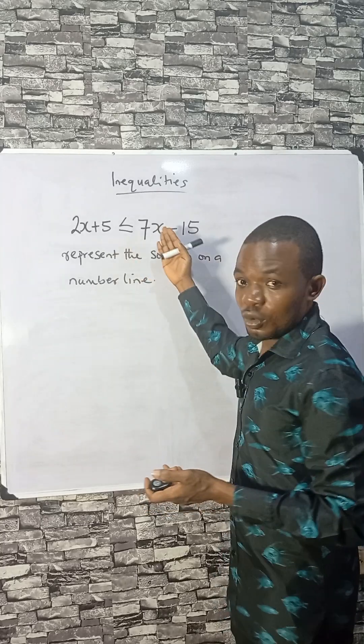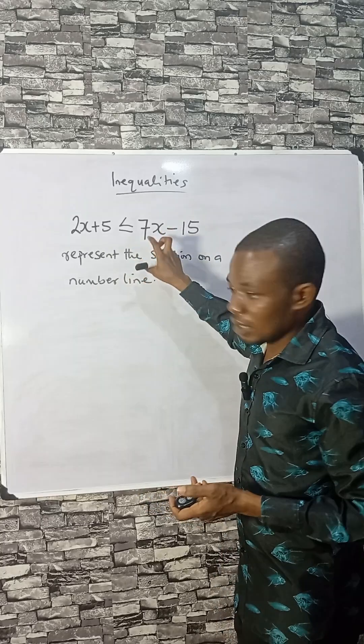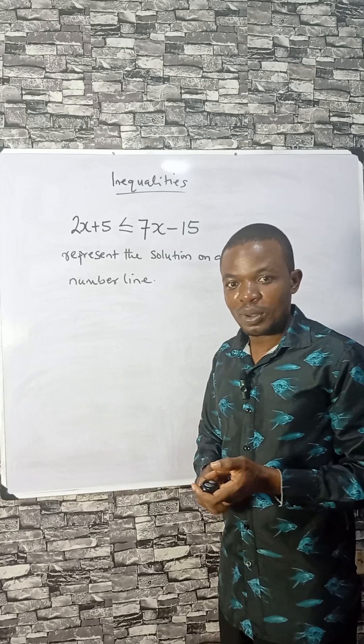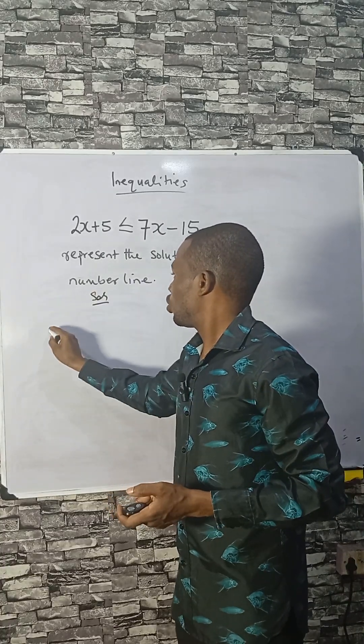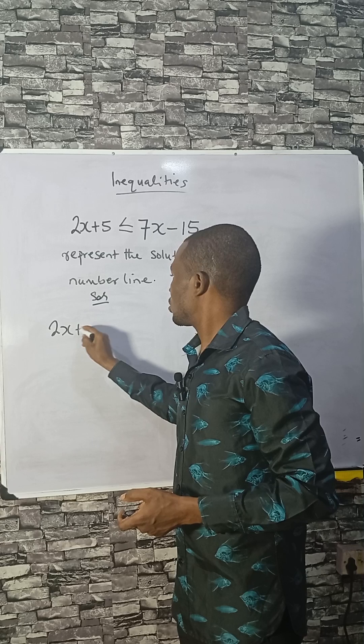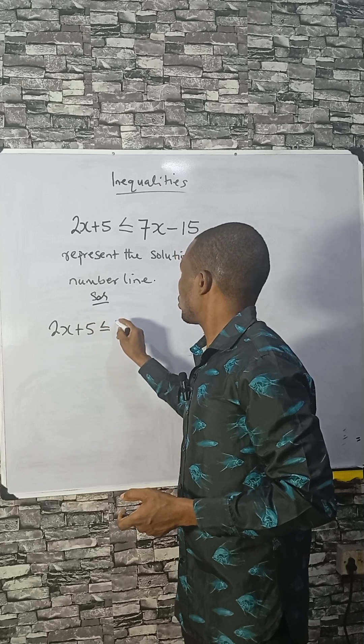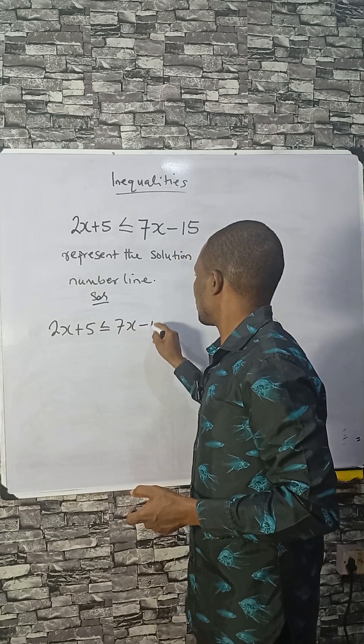We want to see how to solve these inequalities and how to represent the answer on a number line. The problem is 2x + 5 ≤ 7x - 15.